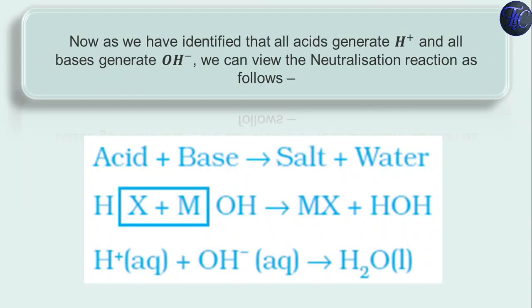Now as we have identified that all acids generate H+ ions and all bases generate OH- ions, we can view the neutralization reaction as follows. Everybody knows what happens when an acid reacts with base. If you don't know then click the i button and watch that video. When acid is reacted with base it will produce salt and water. And it is known as neutralization reaction.